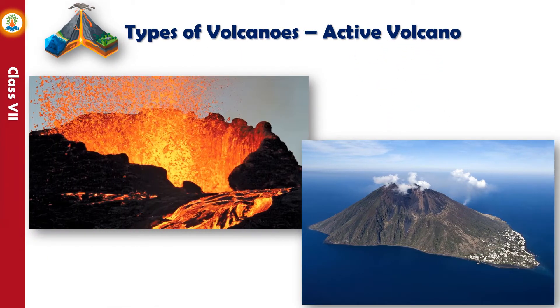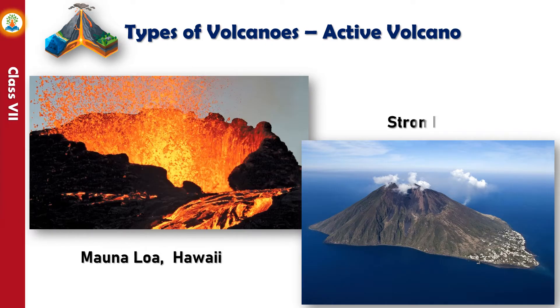An active volcano is one where continuous volcanic activity occurs and eruption can take place anytime, for example Mauna Loa in Hawaii and Stromboli in Italy.